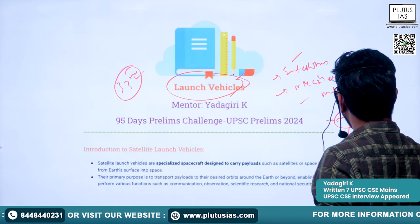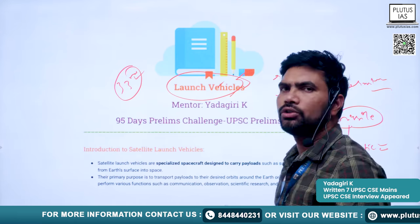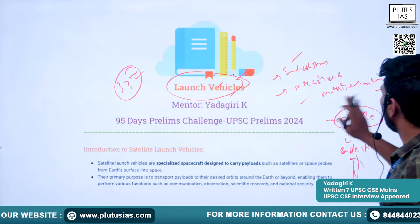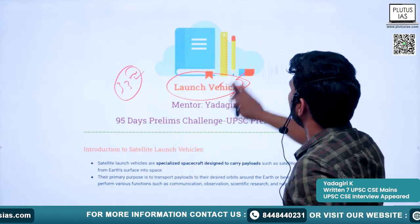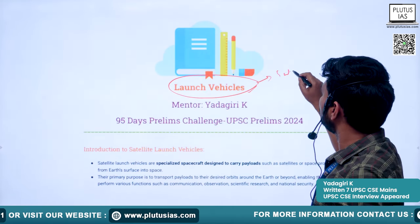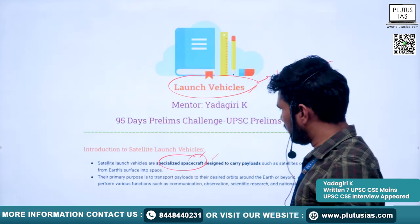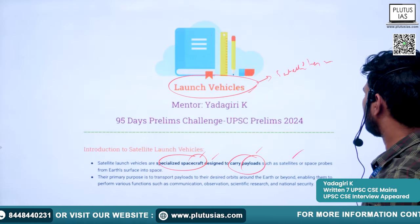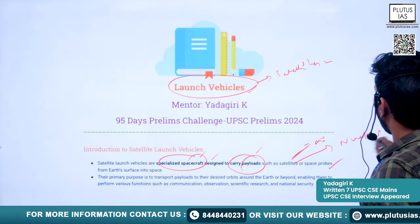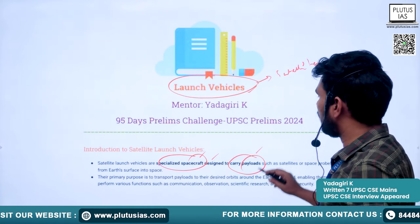Ballistic missiles use similar rocket technology to that used for launching satellites — for example, the Agni missiles. So the technology is similar in both components. Now we will understand launch vehicles, especially those used to launch satellites. In satellite programs the payload is the satellite itself, whereas in missiles the payload is a nuclear, atomic, or conventional explosive material.